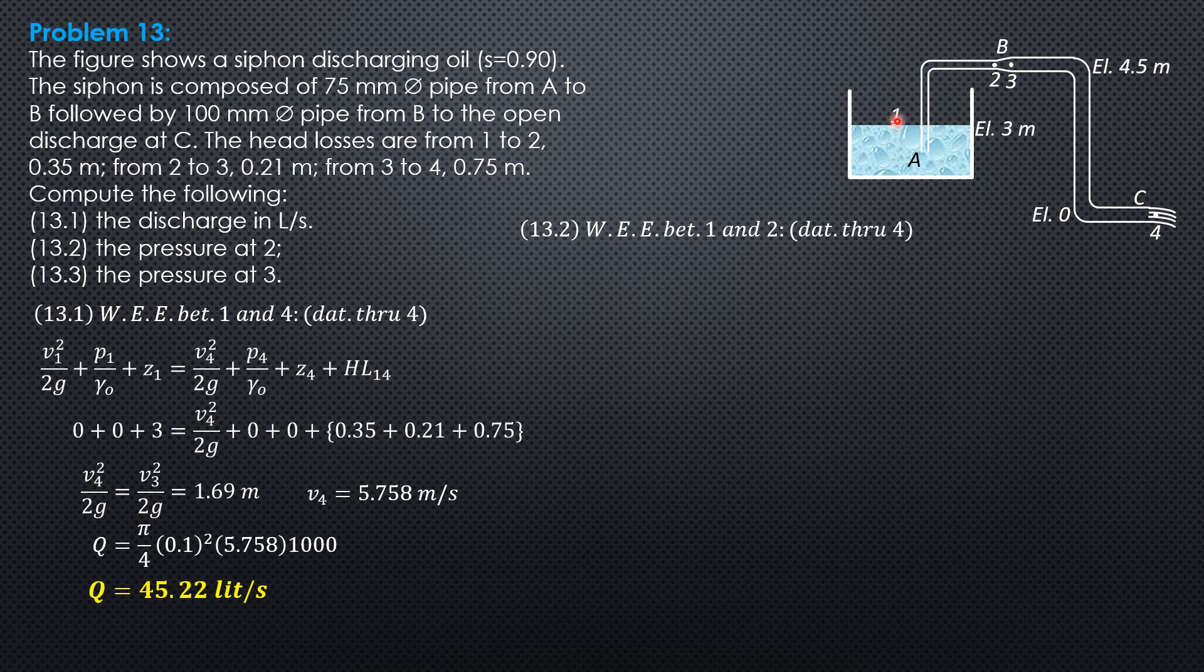Velocity head at 1: 0, pressure head 0, elevation head 3 equals velocity head at 2 (to be computed), pressure head P2 over (0.9 times 9.81), elevation head 4.5 plus head loss between 1 and 2: 0.35.